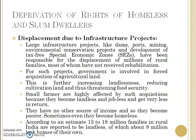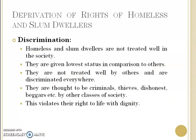This is further increasing landlessness and reducing cultivable land. When agricultural land is acquired for industrial purposes or infrastructure projects, it creates a deficiency of agricultural land and food security is threatened. Small farmers are highly affected because they become landless, jobless, and receive very little compensation which is not sufficient for their whole life. They have no other source of income so they become poorer and sometimes even homeless. According to an estimate, 13 to 18 million families in rural India are reported to be landless, of which about 8 million lack homes of their own — which is a huge figure.